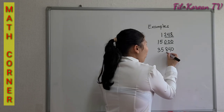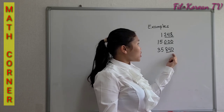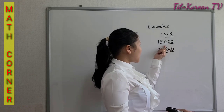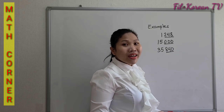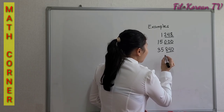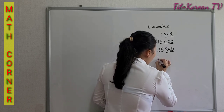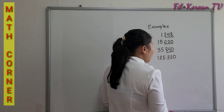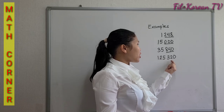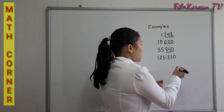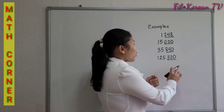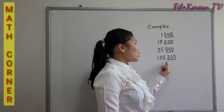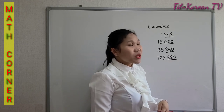Another example: the last three digits form a number 840. 840 can be divided by 8, therefore this number is divisible by 8. Next example: 125,320. The last three digits, 320, is divisible by 8. Therefore, 125,320 is divisible by 8.